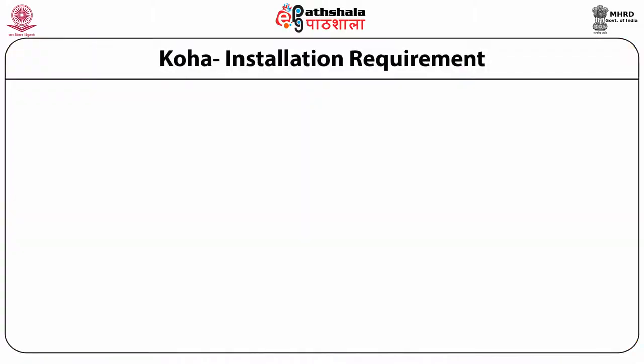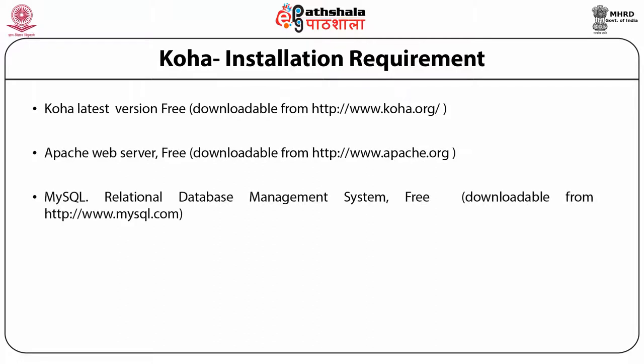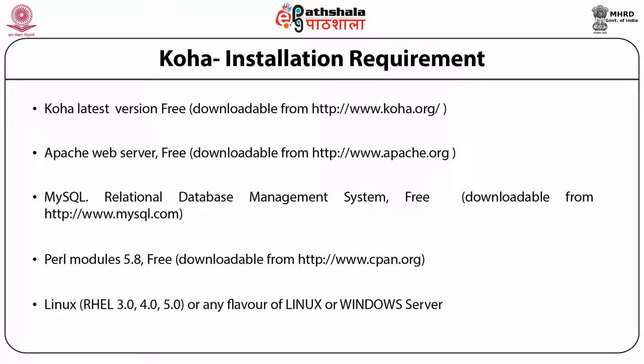The Koha architecture divides software into three different layers: the database layer which manages access to the DBMS, the processing layer which manages the processes required by the users, and the formatting layer which contains templates for HTML presentations. Koha essential requirements for installation include the latest Koha version, Apache web server, a relational database management system (MySQL), Perl modules, and Linux or any other flavor of Linux or Windows server.